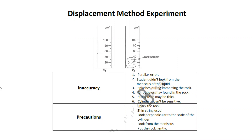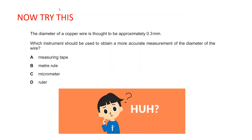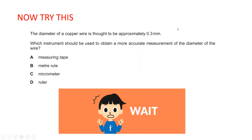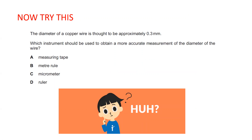Now we'll do some questions related to the topics discussed. The first question: the diameter of a copper wire is thought to be approximately 0.3 mm — a very small value. Which instrument should be used to obtain the most accurate measurement of the diameter of the wire?